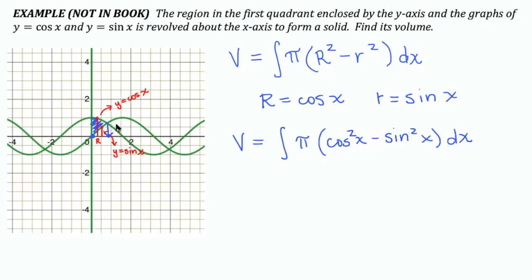Now this intersection point, you can use your graphing calculator technology and trace to find it. You can do the same thing in Desmos. And it turns out that this x value at that location turns out to be pi over 4. So I'm going to integrate from 0 to pi over 4.